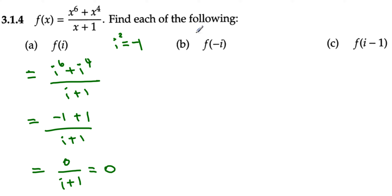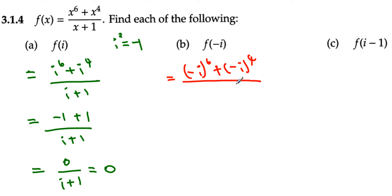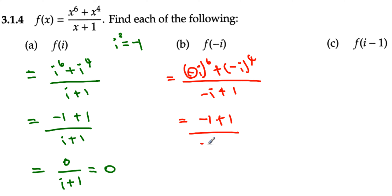Now plugging in negative i: we get (negative i)⁶ plus (negative i)⁴ over i plus 1, or negative i plus 1 in the denominator. Because of the even exponents, the negative signs turn positive. So (negative i)⁶ equals i⁶ equals negative 1, same as before. And (negative i)⁴ equals positive 1. Once again it cancels out to equal 0.